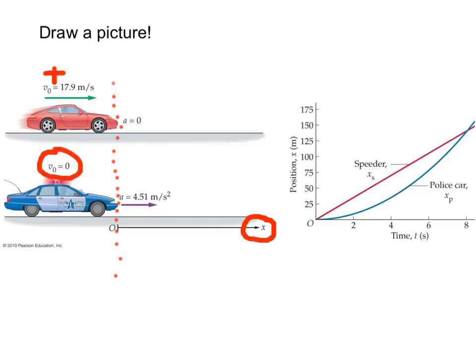The speeder's acceleration is zero, so he stays at a constant velocity, but the police car has an acceleration given by positive, or to the right, 4.51 meters per second squared.